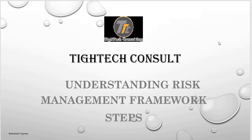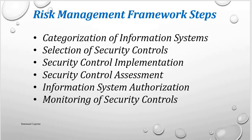Let us now look at the various steps under the risk management framework. Number one: categorization of information system. Number two: selection of security controls. Number three: security control implementation. Number four: security control assessment. Number five: information system authorization. Number six: monitoring of security controls.